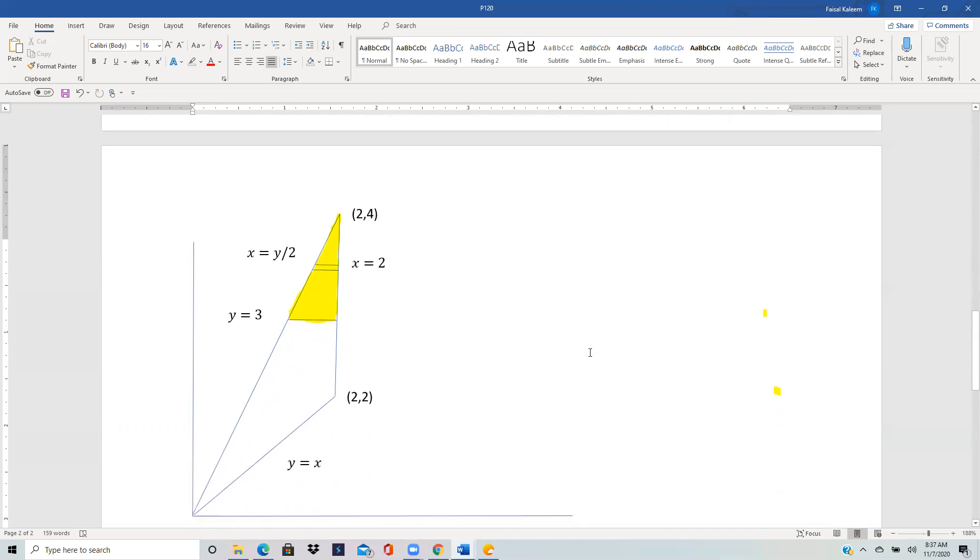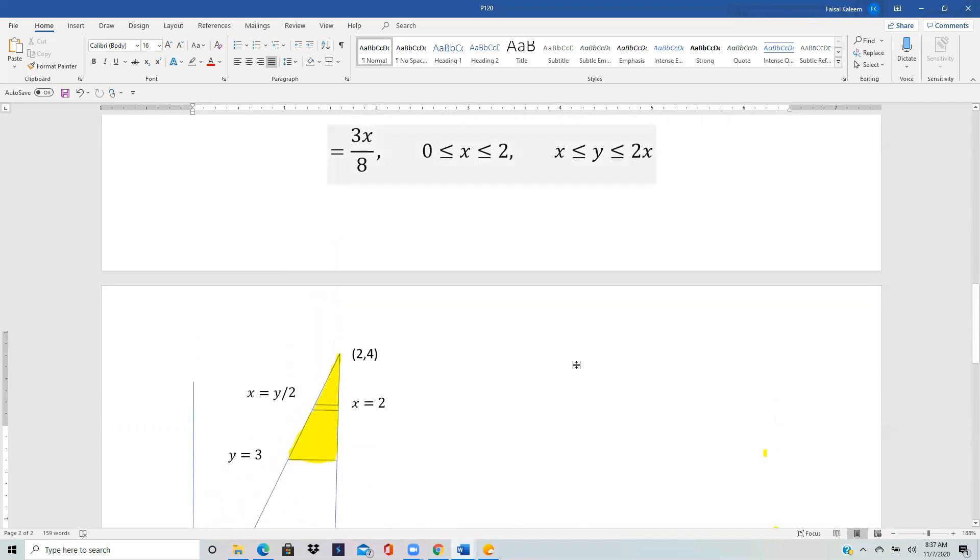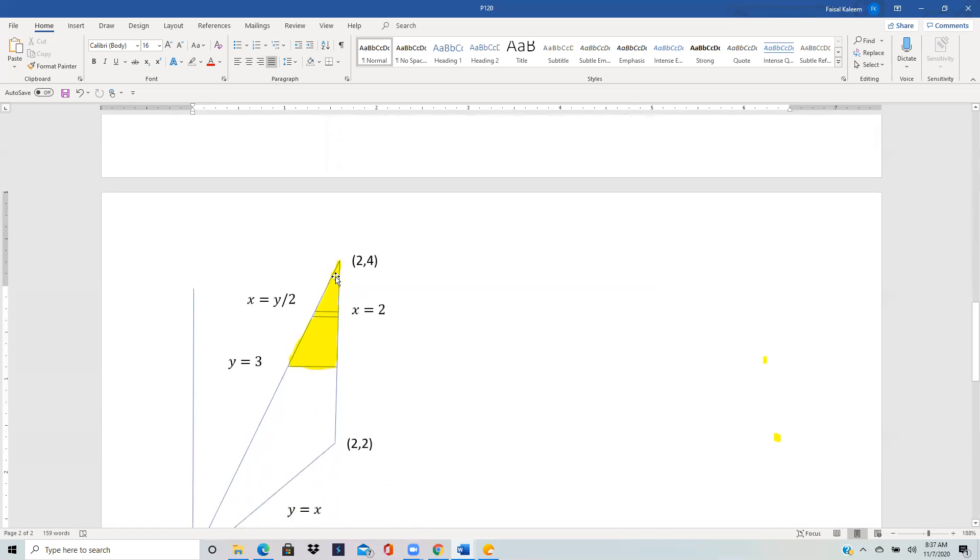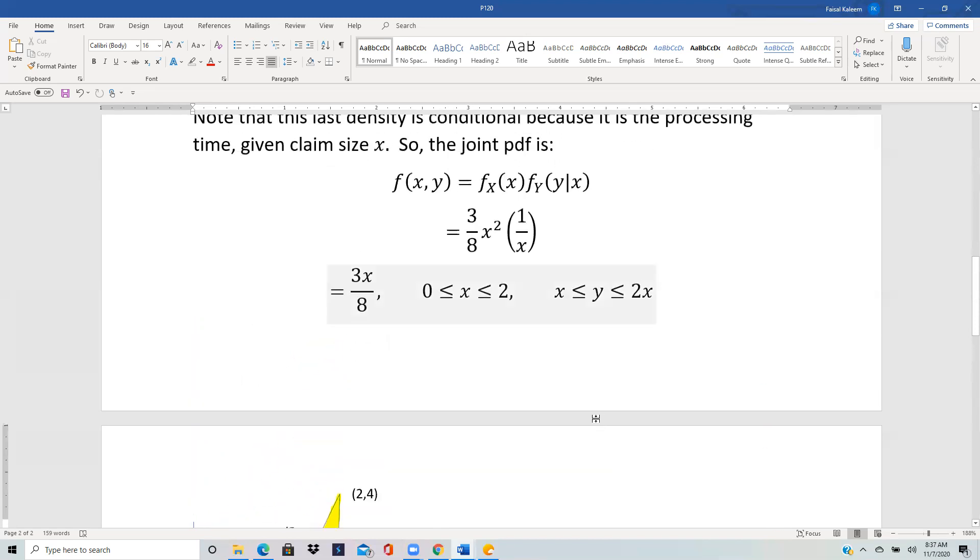Now, if the joint pdf were constant, which it's not, it's 3x by 8, remember in the previous problem the joint pdf was constant. Therefore, in that situation you can just find the area of the integration and that is your probability. But here because of a variable joint pdf, this x spoils the fun and that means that it's no longer just the area.